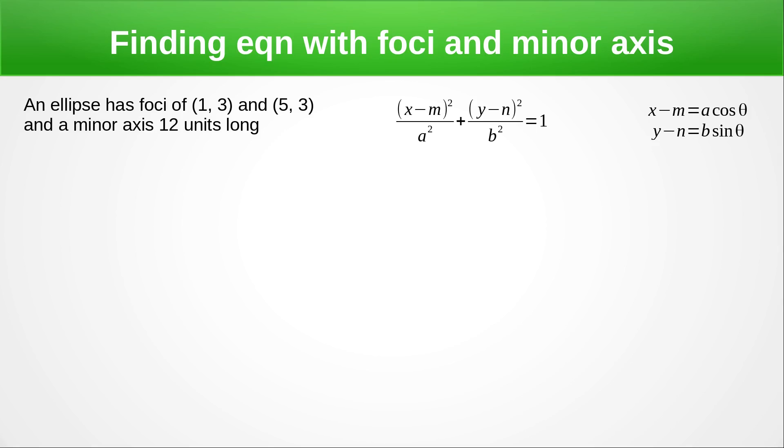So let's look at our next example. This is very similar to the last one. The only difference is that we're going to be dealing with the minor axes rather than the major axes. So the midpoint worked out in the same way, halfway between these. The centre is 3, 3. The distance from here to here is 2, so C is 2. This time it's the minor axes. So we've got B equals half of this value which is 6.